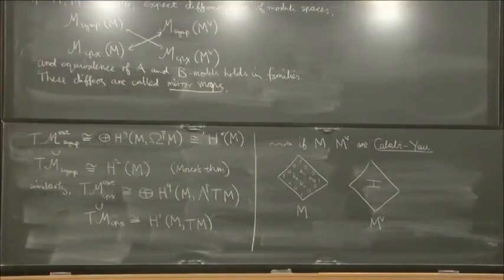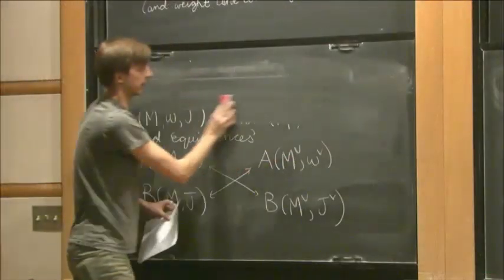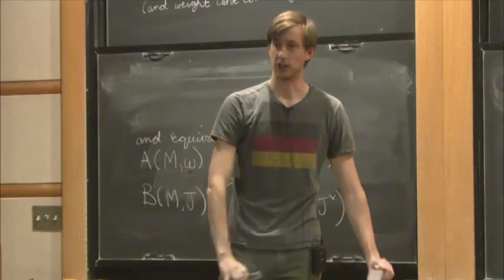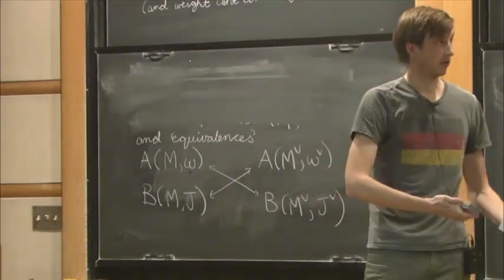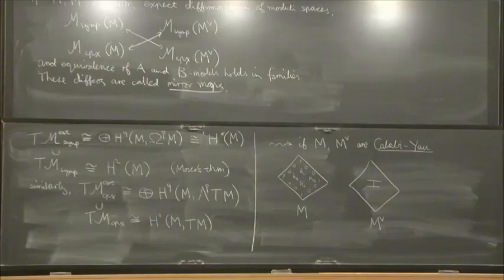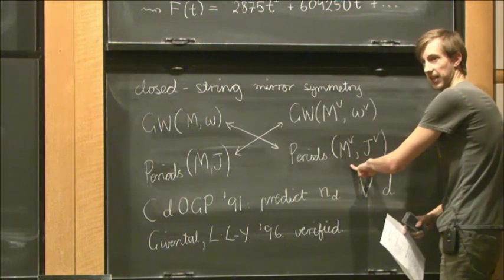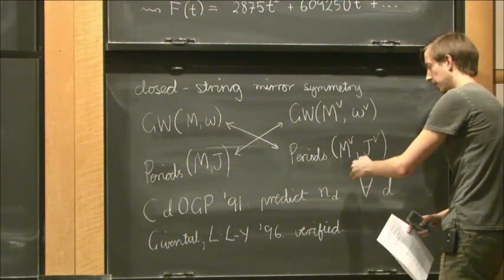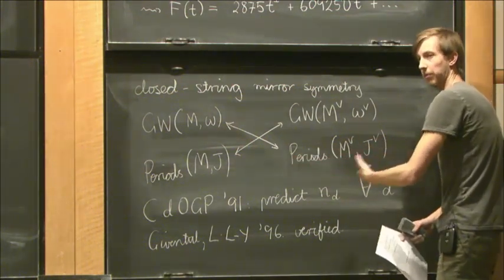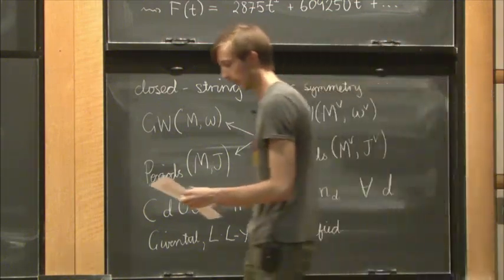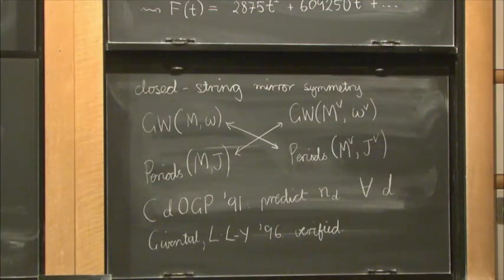Mirror symmetry was also verified when M is not Calabi-Yau but rather Fano. In that case you don't put a complex manifold on the mirror side but rather what's called a Landau-Ginzburg model — a variety equipped with a regular function. You have to rethink what you mean by the B model. But the Fano version of closed-string mirror symmetry was also verified by the same people.